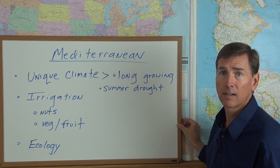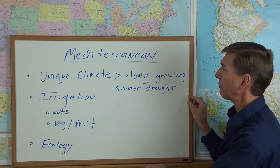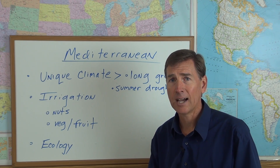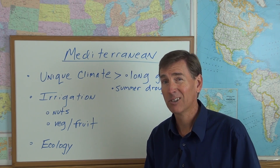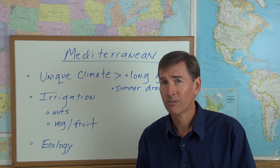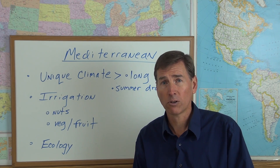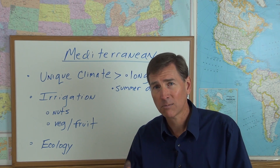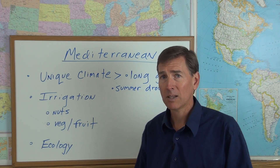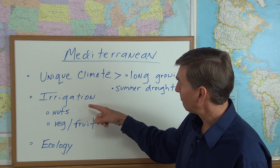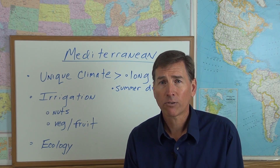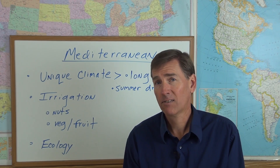Next is Mediterranean climate agriculture. Here in California — just like in Spain — we have a summer drought. From roughly the end of May through November, there are six months with very little rain. Without irrigation, only crops like wheat, olives, and a few others can grow in this climate.